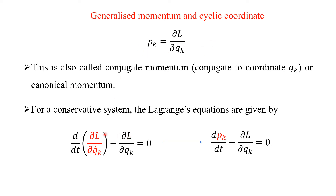For a conservative system, the Lagrangian equations are given by the partial time derivative of delta L over delta q_k-dot, minus delta L over delta q_k, equal to zero. The term in red — delta L over delta q_k-dot — is nothing but P_k. So it can be written as the time derivative of P_k minus delta L over delta q_k equals zero.